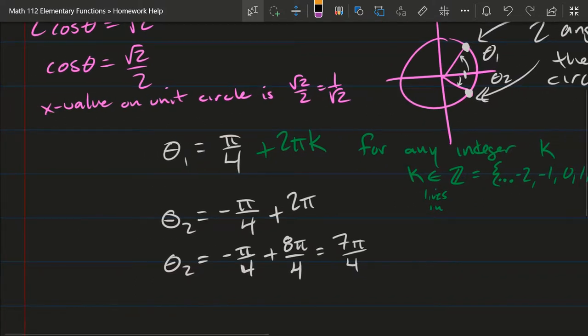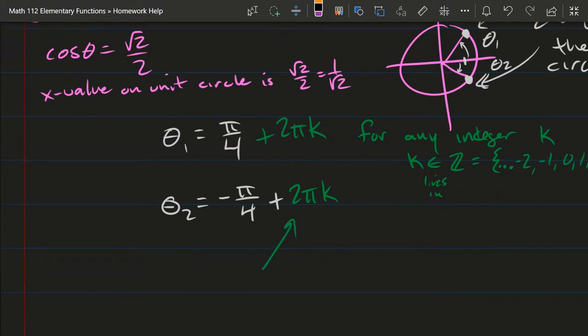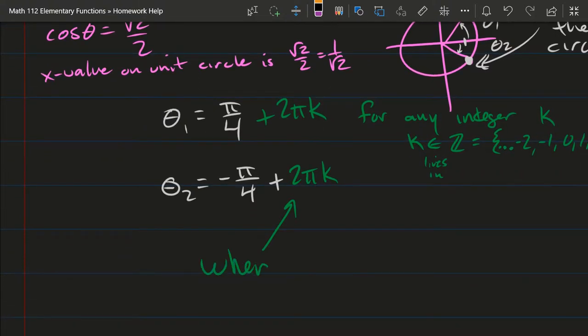You do have to add that. There are two different angles, θ₁ and θ₂. And if you're wondering how would I get the θ₂ that I'm erasing, this 7π/4, how would I get that? I would get it from this θ₂ where k equals 1. So if you plug in 1 for k, that's exactly what I just erased, and that would give us the 7π/4.